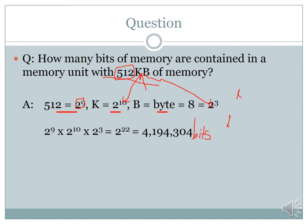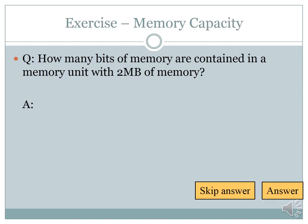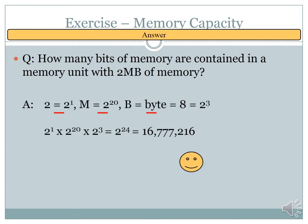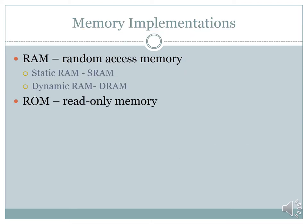For another example: how many bits of memory are contained in a memory unit with 2 megabytes? Mega is 2 to the power 20, and a byte is 2 to the power 3, so the total is 2¹ × 2²⁰ × 2³ = 2²⁴ = 16,777,216 bits. That is the number of bits you get in 2 megabytes of memory.